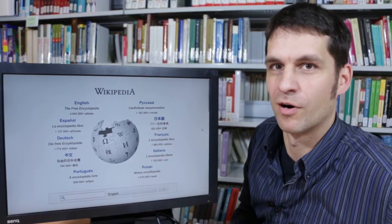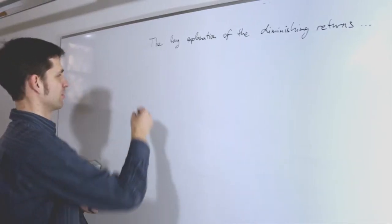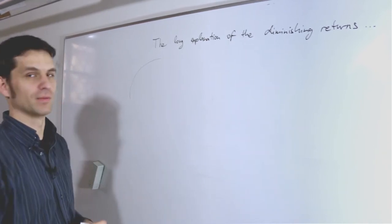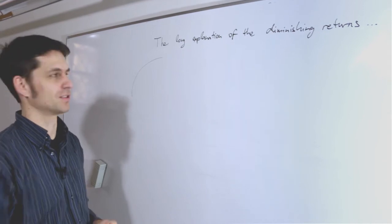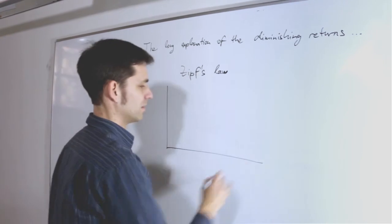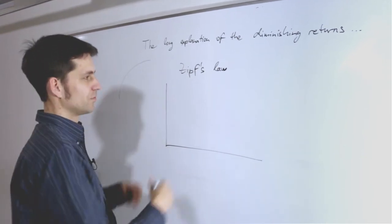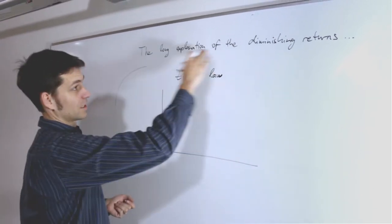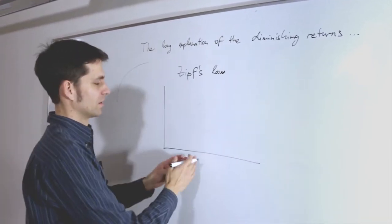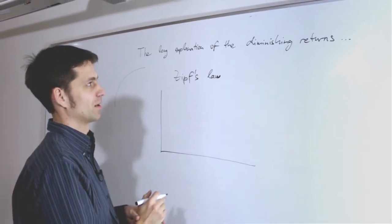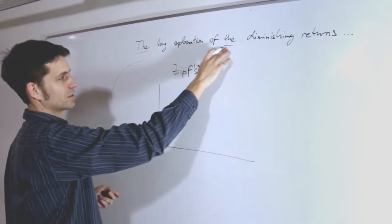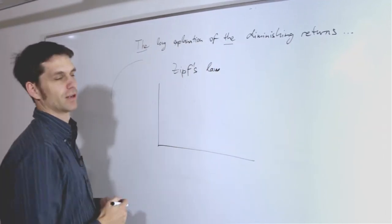The long explanation of the diminishing returns we get as we are collecting more and more data lies in one of the power laws that you will find everywhere in natural language processing or NLP. It's Zipf's law. Zipf's law states that if you take any text, such as this sentence, that some of the words in it will be very frequent and there will be a very long list of words that are rather infrequent. And indeed, already in this beginning of the sentence, we have two occurrences of the definite article, the most frequent English word.